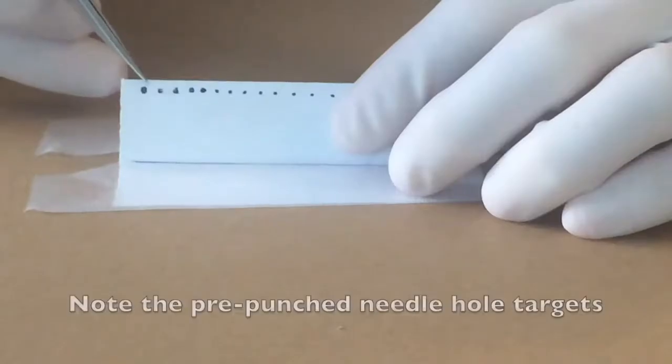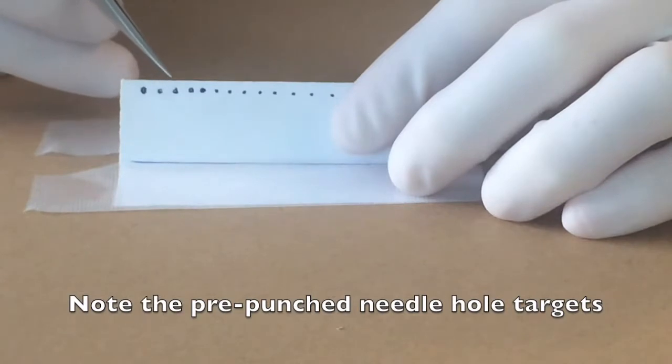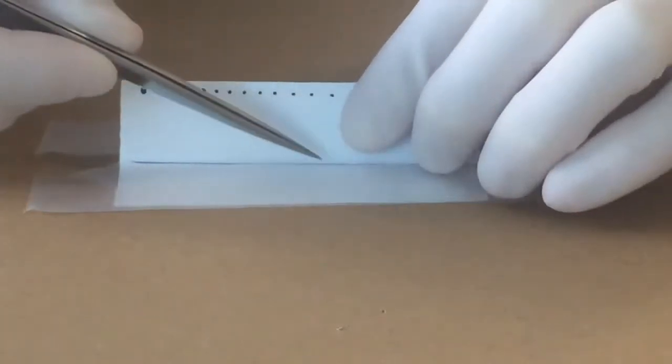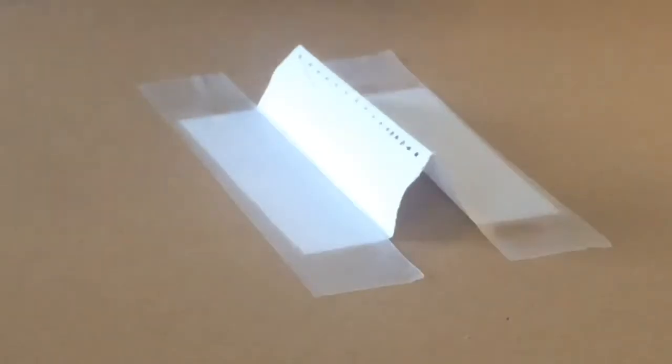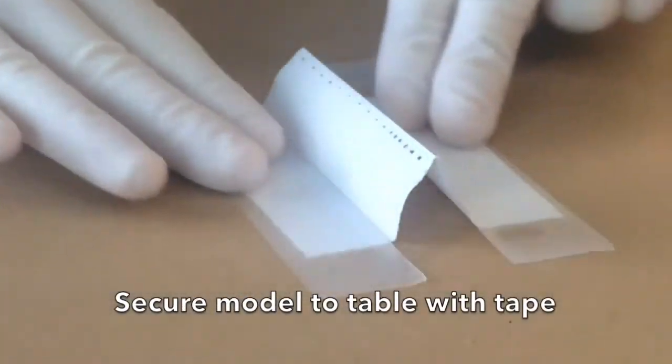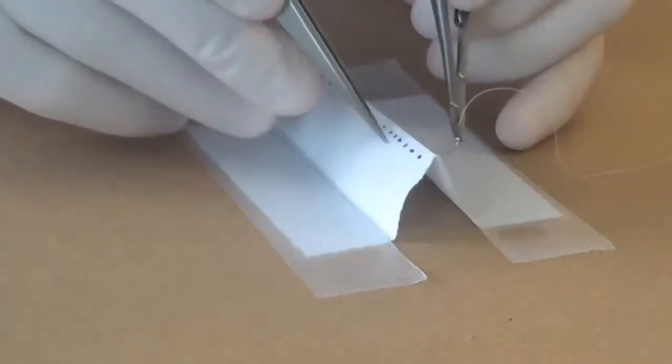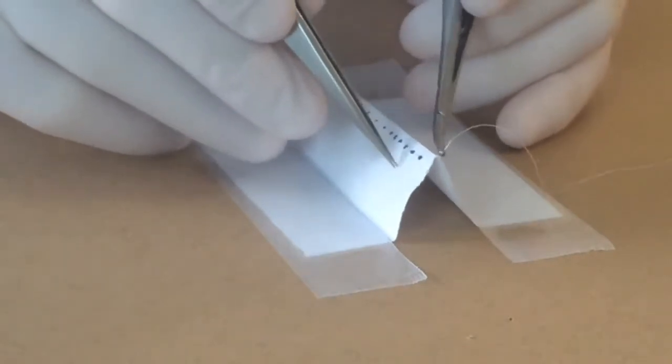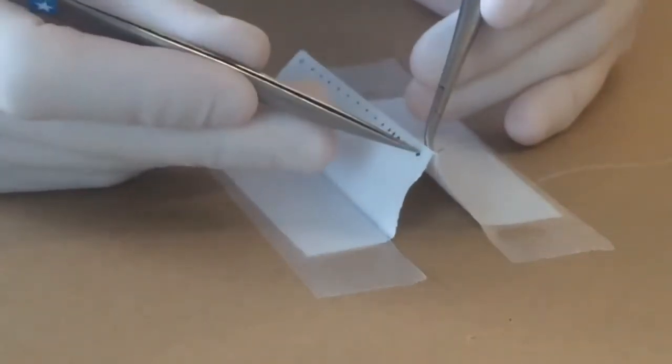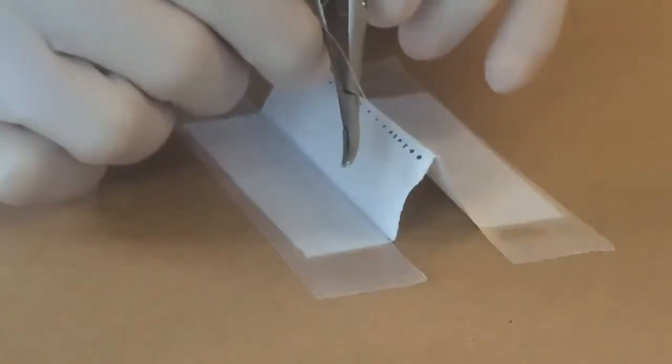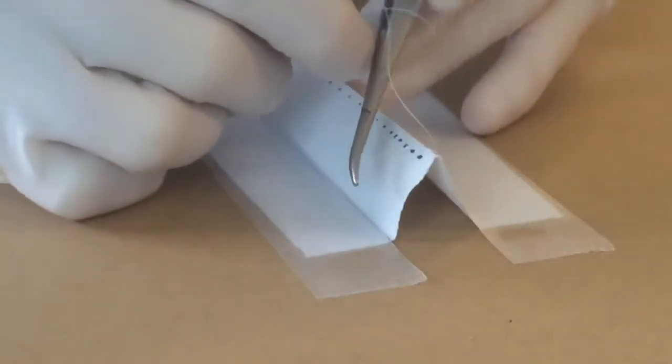The first exercise tests ankle-face suturing. Note the pre-punched needle hole targets. Secure the model to the table with tape as shown. Place the needle through the pre-punched holes. The objective is to pass the needle through the prescribed target holes, emphasizing proper rotation of the needle driver.